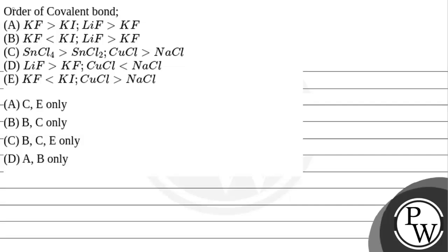Let's read the question. The question asks about the order of covalent bond. We have to find the order. Options given: KF is greater than KI, LiF is greater than KF; option B: KF is lesser than KI, LiF is greater than KF; option C: SnCl4 is greater than SnCl2, CuCl is lesser than NaCl; option D: CuCl is greater than NaCl, KF is lesser than KI.